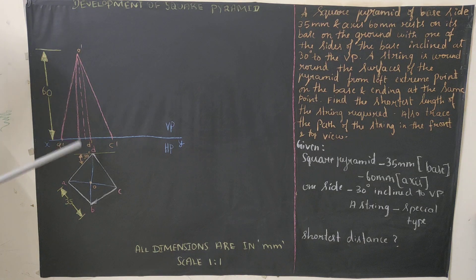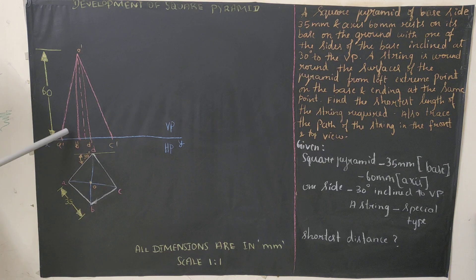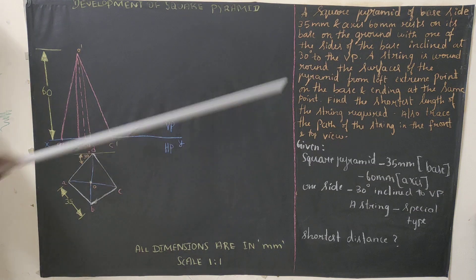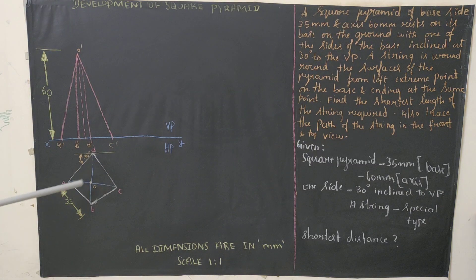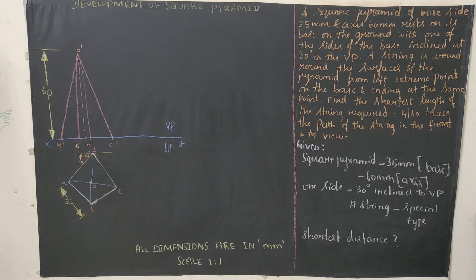The topmost point is the apex, named O'. Join O' to all projected base points — A', B', C', D'. The axis dimension is 60mm drawn with extension and dimension lines. Now, whenever we have a pyramid we must give preference to slant edges OA, OB, OC, OD. Check whether OC is parallel to the reference line — it won't be perfectly parallel, so we need to construct a true slant edge.